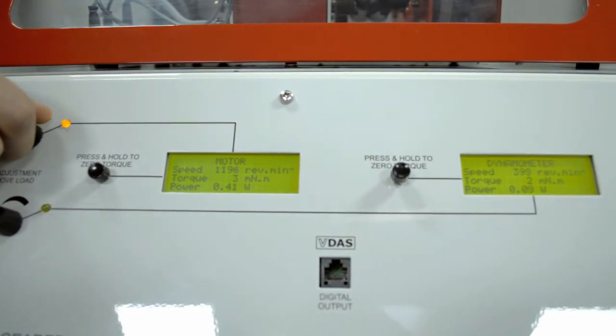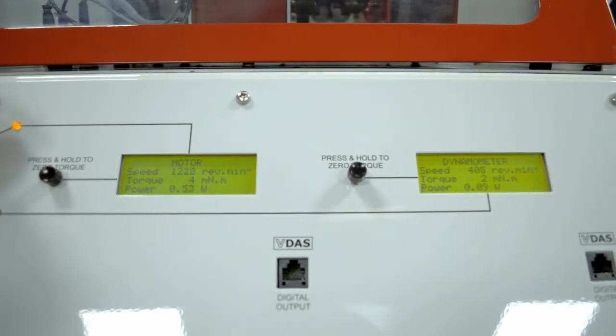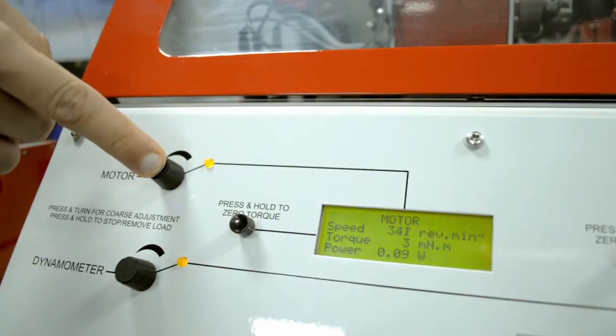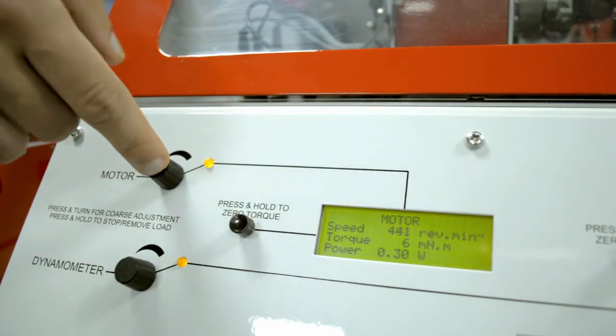Fine and coarse adjustment are available for motor speed and load and the microprocessor controlled multi-line display shows measurements of torque, speed and power.